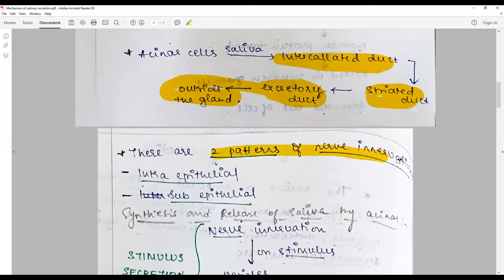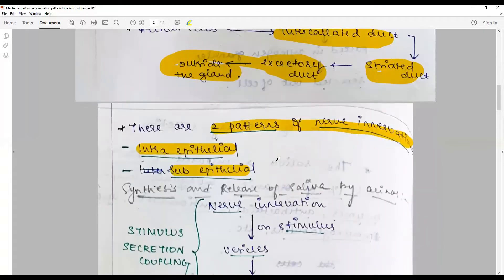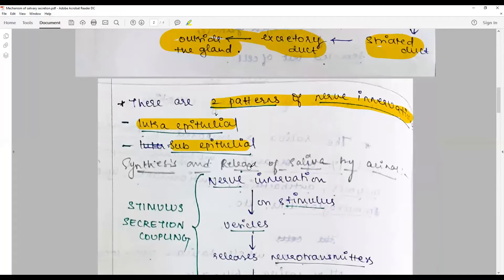There are two patterns of nerve innervation or control: one is the intra-epithelial and the sub-epithelial. For more details on the nerve innervation, refer to the video on nervous innervation and control over the salivary gland in this channel.